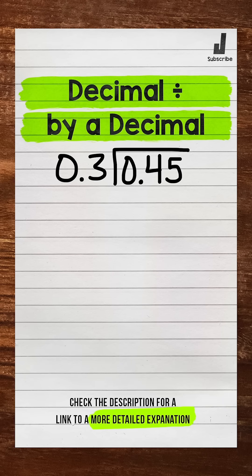Now in this problem, the divisor, what's on the outside, is a decimal. We need to make it a whole number. Let's move the decimal once to the right. Whatever we do to the outside, we must do to the inside.